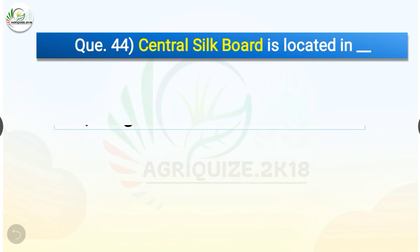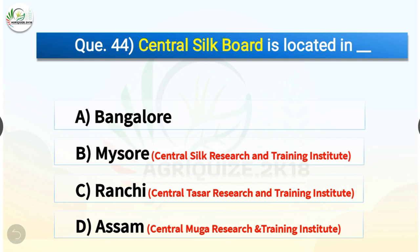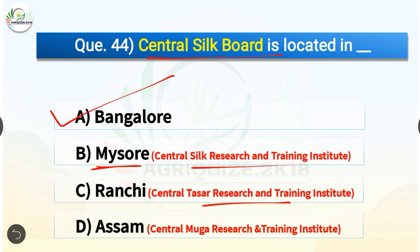Question number forty-four: Central Silk Board is located in — options are Bangalore, Mysore, Ranchi, or Assam. The correct answer is option A, Bangalore. Central Silk Research and Training Institute is located in Mysore. Central Tasar Research and Training Institute is located in Ranchi, and Central Muga Research and Training Institute is located in Assam.